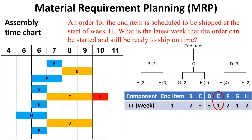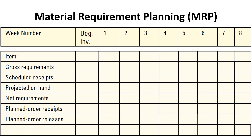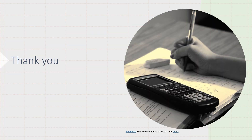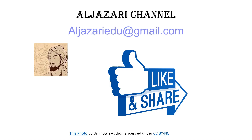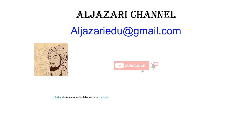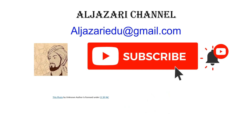The assembly time chart is finished. We can conclude that the latest week that the order can be started and still be ready to ship on week 11 is week 5. Once we find the required number of items to assemble a certain number of end items and construct the assembly time chart, the MRP can be created in the shown table, and this will be explained in the next video. Thanks for watching. If you liked this video, press like and share it, and do not forget to subscribe to the channel and activate the alarm to be notified of the new videos.